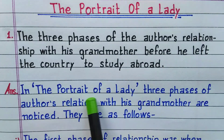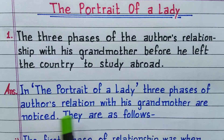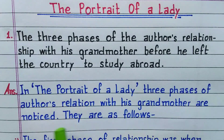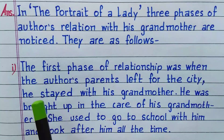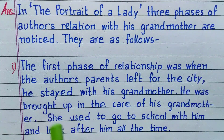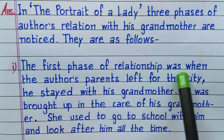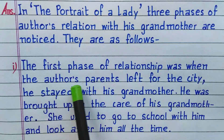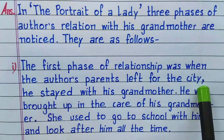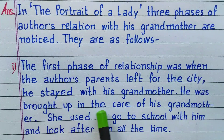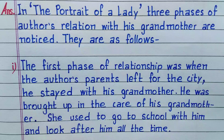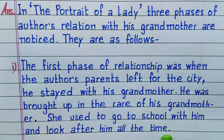In The Portrait of a Lady, three phases of the author's relationship with his grandmother are noticed. Number 1: The first phase of the relationship was when the author's parents left for the city. He stayed with his grandmother and was brought up in her care. She used to go to school with him and look after him all the time.